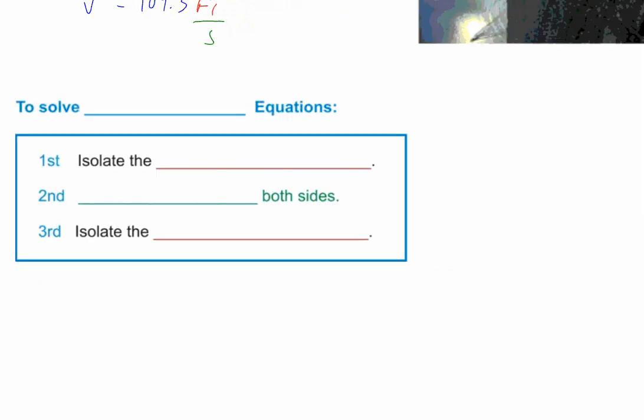All right, so down to the nitty gritty. How do you solve radical equations? To solve radical equations, this is the same thing we would have learned in pre-algebra. First off, isolate the radical. Second, square both sides, because squares undo square roots. And third, isolate the variable. Just got to remember to isolate your radical first, then you square both sides, and then it's like a normal equation.